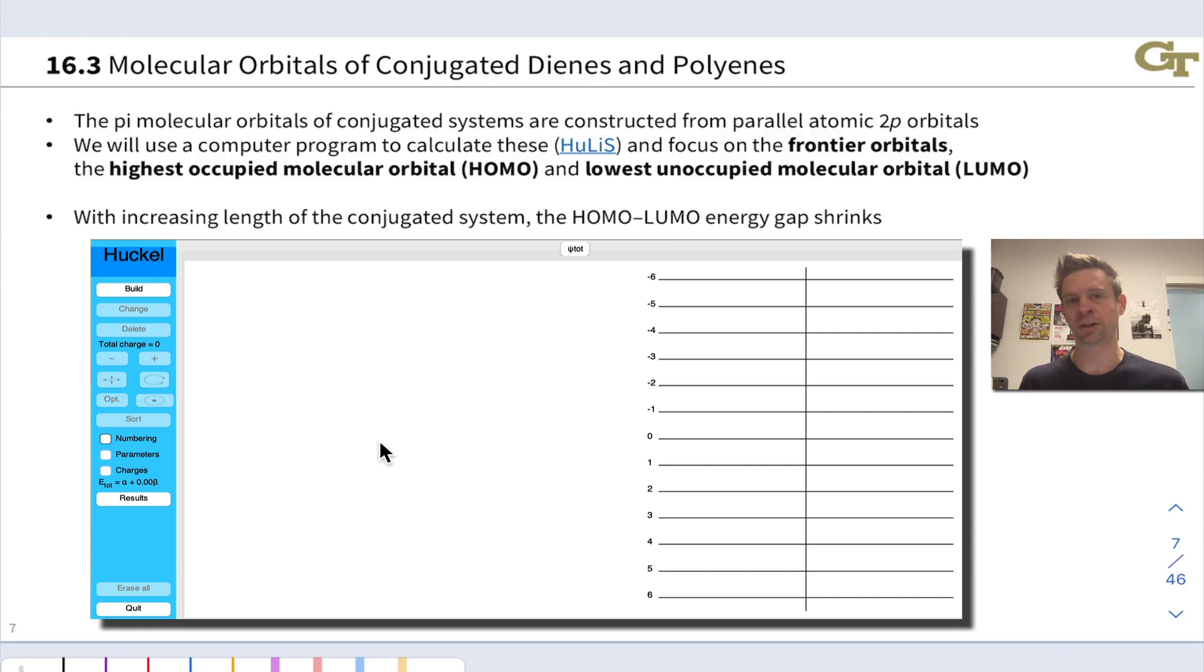particularly the frontier molecular orbitals, the highest occupied molecular orbital and lowest unoccupied molecular orbital, allows us to gain deep chemical insight into how conjugated systems behave. We're going to let the computer do the math for us and just interpret the results.